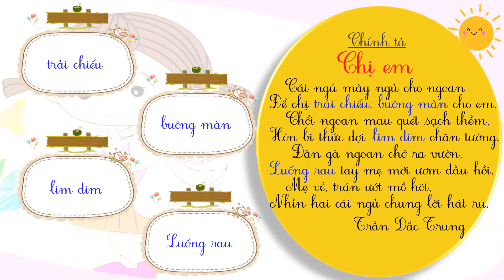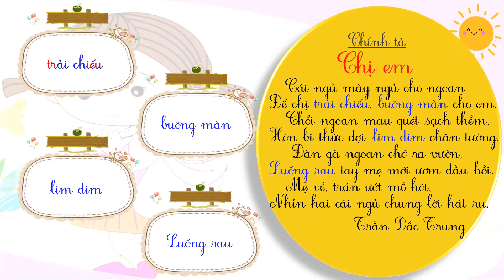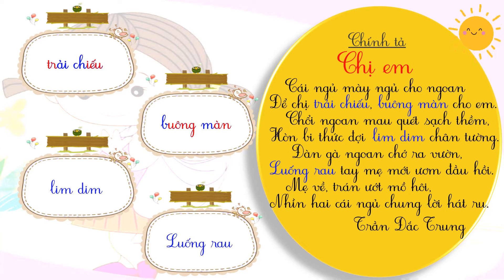Bây giờ cô cùng các em sẽ phân tích những từ này để các em viết chính xác hơn. Từ đầu tiên: 'trải chiếu' — các em lưu ý tiếng 'trải', lưu ý âm tr, và tiếng 'chiếu', chú ý phần 'iêu'. Từ 'buông màn' — lưu ý phần 'uôn' và phần 'an'. Từ 'liêm diêm' — cả hai tiếng đều có phần 'iêm'. Cuối cùng là từ 'luống râu' — các em chú ý phần 'uôn'.